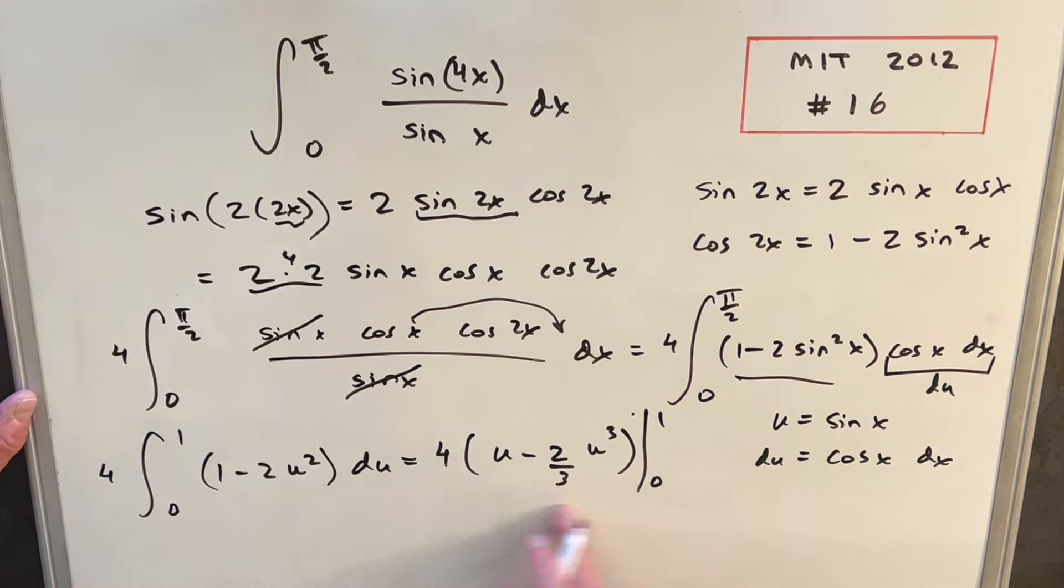Now you notice we plug 0 in here, this whole thing is going to be 0. So we're not going to worry about that, but we're just going to think about the 1. So we'll plug our 1 in. We're going to have 4. 1 here is going to be 1 minus just 2 thirds. This here is going to be 1 third. And so we're left with our final solution. It's going to be just 4 over 3.